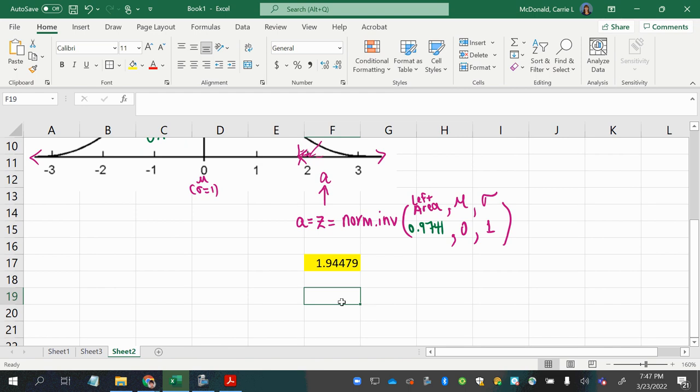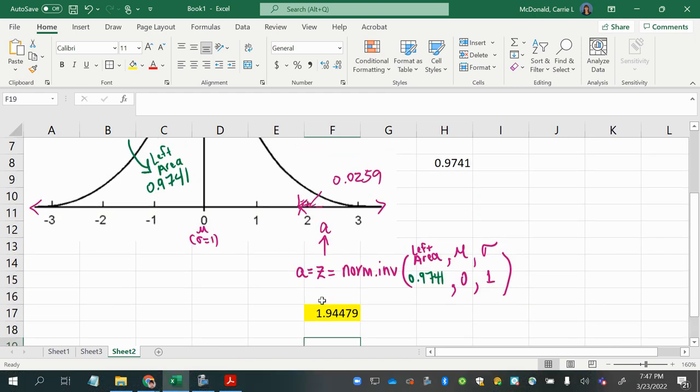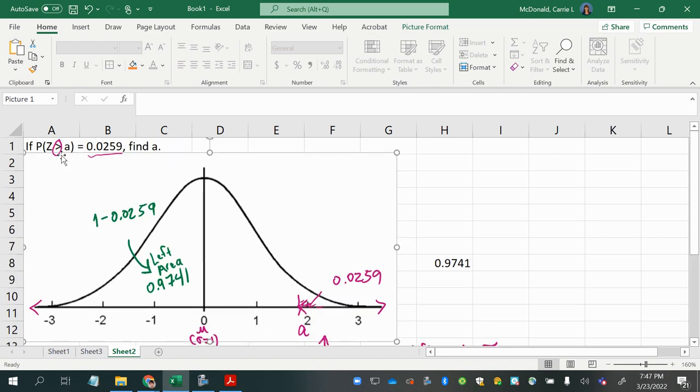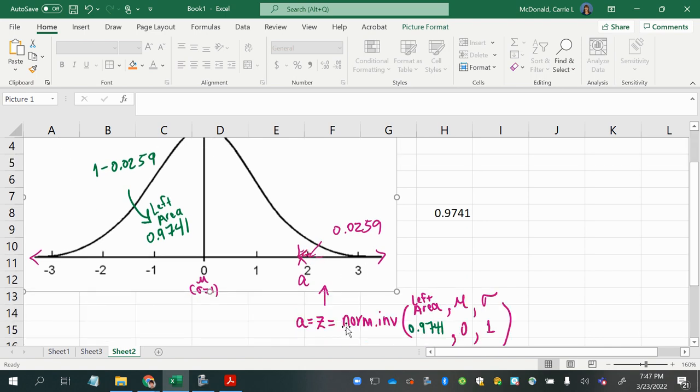All right, so now let's look at how we can do this with the Z score table. So once again, we knew to set this up with the boundary on the right side of the mean, or in other words, a positive Z score, because the area to its right was going to be so small. And we knew to shade to the right because it had a greater than sign. So all of that's set up. I'm looking at it. I want to go use the Z score table.